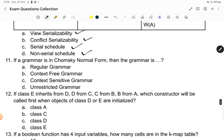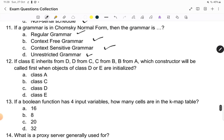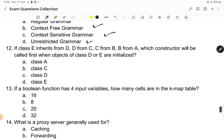Next question was if a grammar is in Chomsky normal form then the grammar is regular grammar, context free grammar, context sensitive grammar, or unrestricted grammar? Next question was if class E inherits from D and D from C, C from B, B from A, which constructor will be called first when the object of class D or E are initialized? Class A, class C, class D, class E.